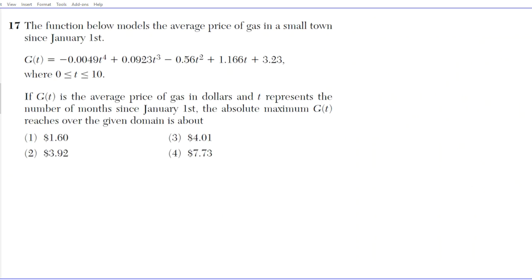Let's take a look at question 17. It reads: the function below models the average price of gas in a small town since January 1st, where G(t) is the average price in dollars and t represents the number of months since January 1st. We're trying to find the absolute maximum of G(t) over the given domain from 0 to 10. There are two ways to do this using our calculators: the graphing window or the Fmax function.